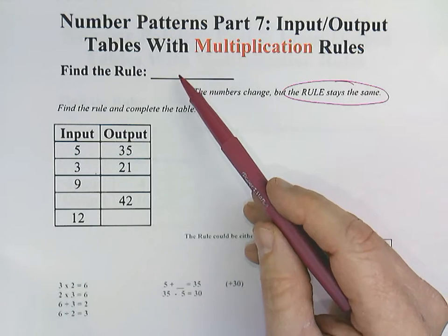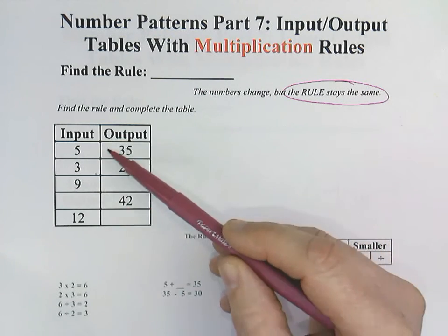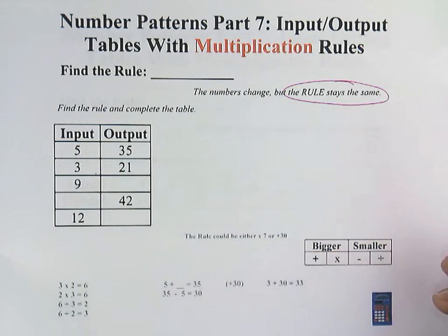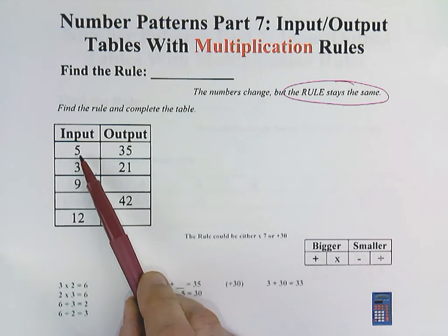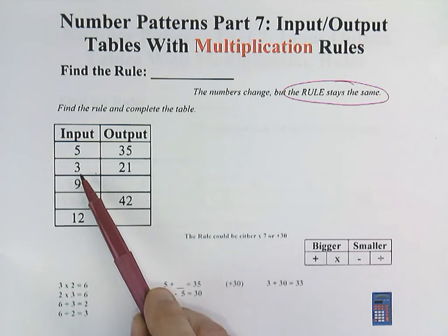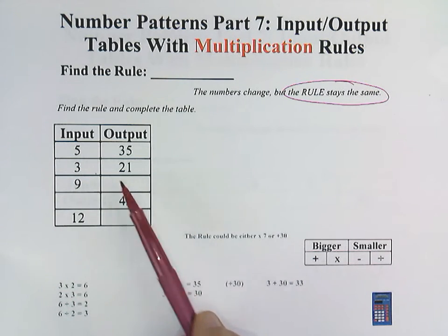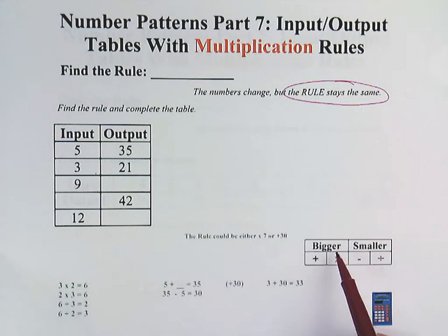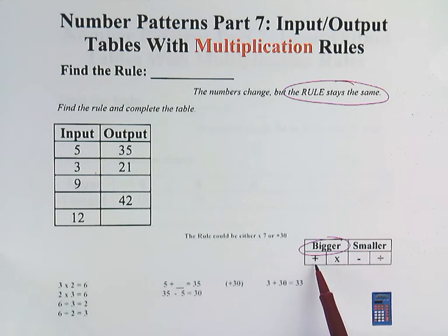Finding the rule is important because we have to be able to apply it to every single input and output value. Okay, we start with 5, 35. Next, 3 and 21. So we are definitely getting rules that are bigger. And it's either going to be in a plus rule or multiplication.